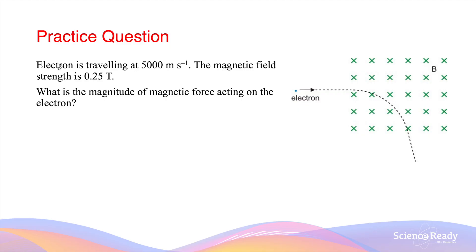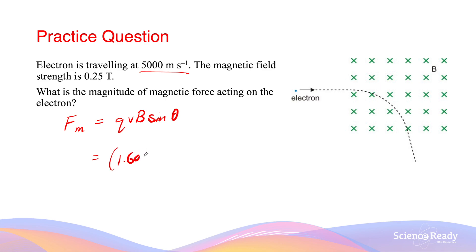Now let's look at a calculation example. An electron is traveling at 5000 meters per second and the magnetic field strength of this field going into the screen is 0.25 Teslas. What is the magnitude of the magnetic force acting on the electron? The magnitude of the magnetic force is given by qvB sinθ. The charge is 1.602 × 10⁻¹⁹ coulombs for the electron. The velocity is 5000 meters per second and B is 0.25 Teslas. The angle theta is the angle between the velocity of the charged particle and the direction of the magnetic field.